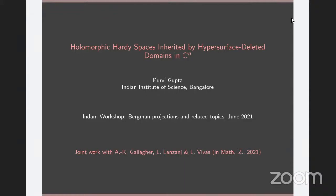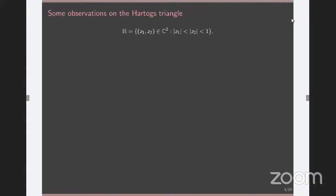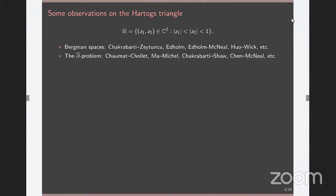Our results appear in a paper that appeared in MathSciNet earlier this year. Before I delve into the construction, there was a certain phenomenon that we stumbled upon which led us to this construction. At the time, we were looking at the Hartogs triangle, which is an object everybody is very familiar with and has already made many appearances in this conference. It has received extensive attention especially from the point of view of Bergman spaces and the d-bar problem. What we noticed in this extensive literature was that we didn't see any mention of a boundary integral representation formula for the Hartogs triangle.